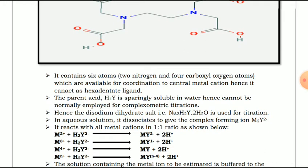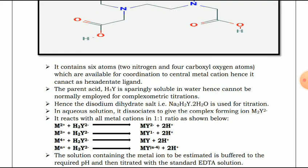The solution containing the metal ion to be estimated is buffered to the required or desired pH and then titrated with the standard EDTA solution. Each metal ion solution must be buffered at a particular pH because EDTA forms its complex with the respective metal ion only at that specific pH.